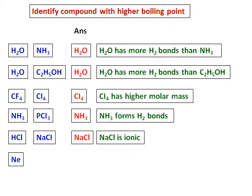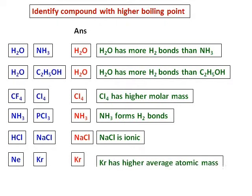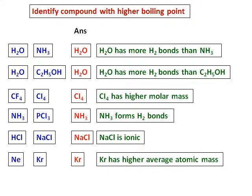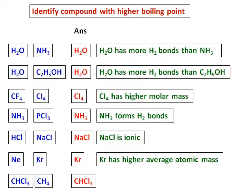Then we will compare the inert gas neon with another inert gas, krypton. In this case, we have to consider the molar mass — the atomic mass of Kr is larger — and hence krypton has a higher boiling point. Then we have CHCl3 and CH4. Between the two, CHCl3 has a higher molar mass and is also polar; hence CHCl3 will have a higher boiling point.